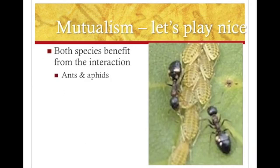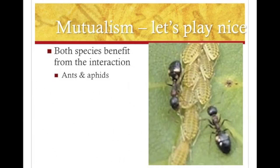The next one is mutualism — both species benefit. The big ideas are ants and aphids, and bees and flowers, because there's pollination and food. So those are beneficial to both parties.